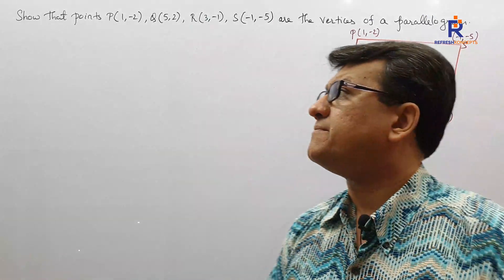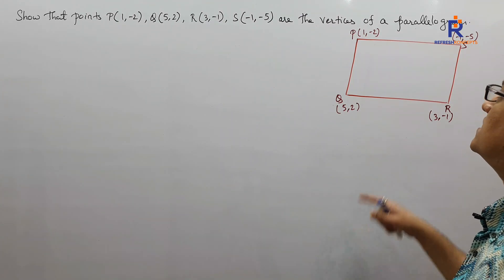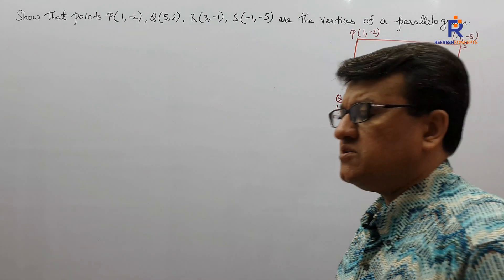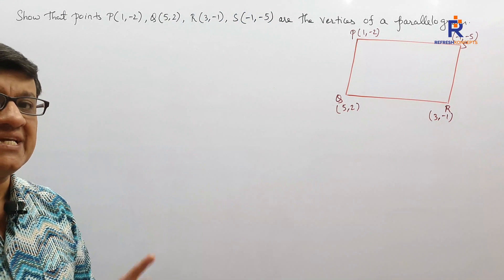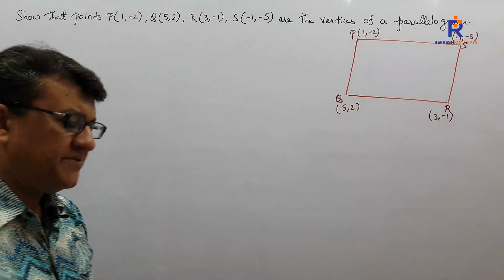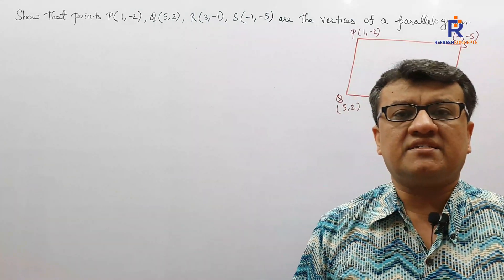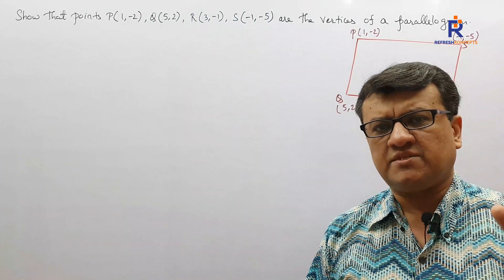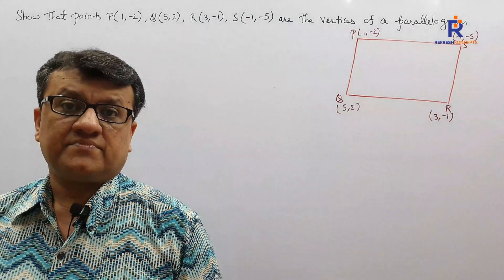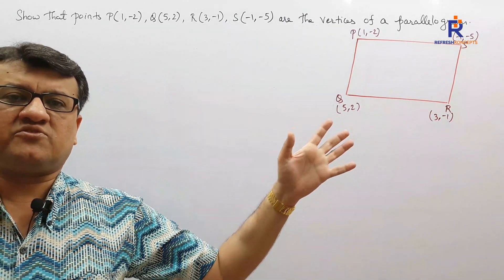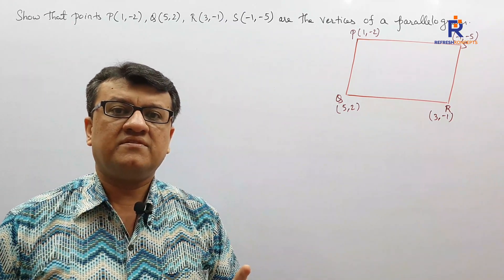The question says: show that the points P, Q, R and S are the vertices of a parallelogram. We have been given four vertices of a quadrilateral and we intend to prove that it is a parallelogram. We will be solving this sum by the definition as well as the property of parallelogram. Whenever a question asks to show that vertices form a parallelogram, rhombus, square, or rectangle, we always solve coordinate geometry sums using definitions and properties.